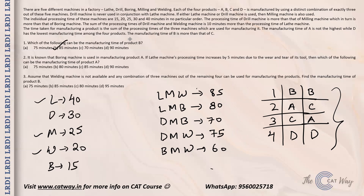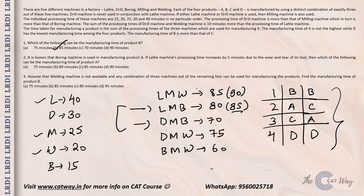Question 2: It is known that the boring machine is used in manufacturing product A, and if the L machine is used, processing time increases by 5 minutes. A must use boring (B=15), so A is one of: L,M,B or D,M,B or B,M,W — but not B,M,W since that gives the lowest time (reserved for product D). With the 5-minute L machine increase, L,M,B becomes 85 and D,M,B stays 70. A can occupy second position, so the manufacturing time of A is 85. The correct answer is option C: 85 minutes.